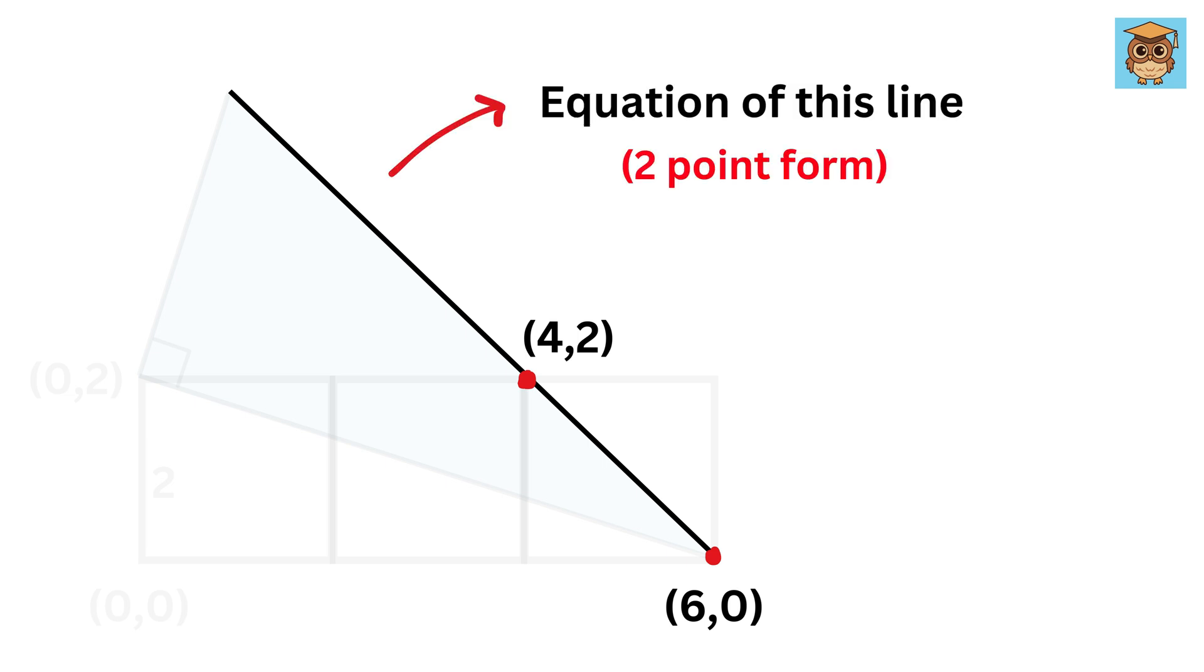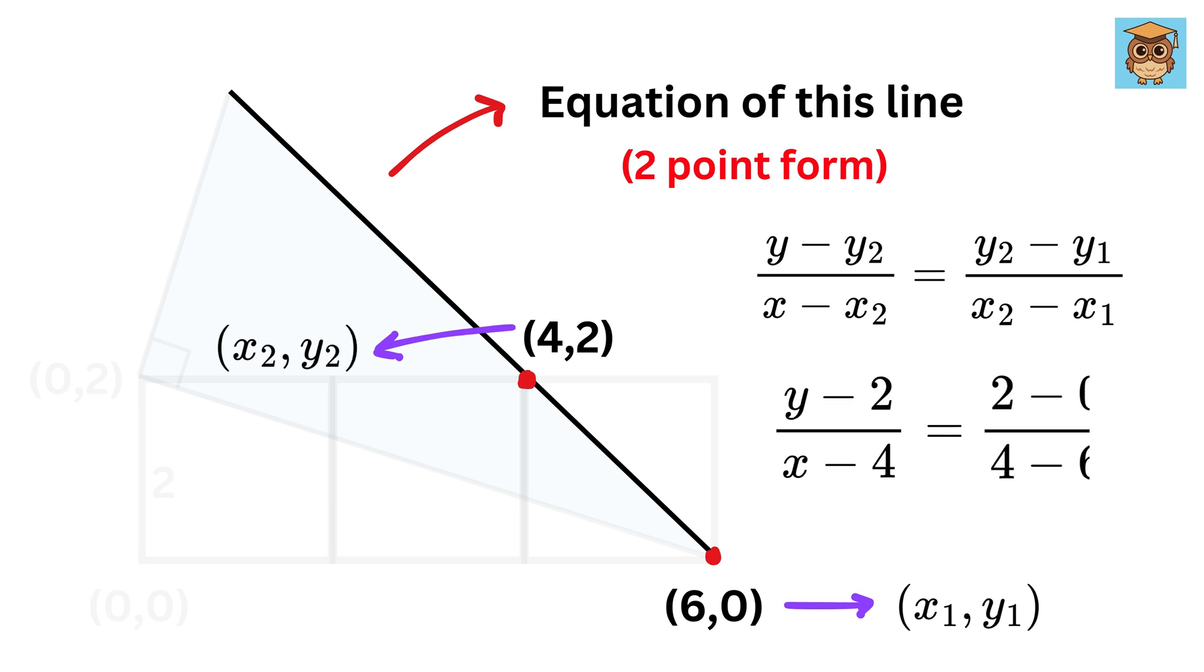Using the two-point form formula, which is this, let us call this as x1 y1 and this as x2 y2. So let us substitute it in this formula to get this. Right side will become two minus zero divided by four minus six, or two upon negative two, or minus one.